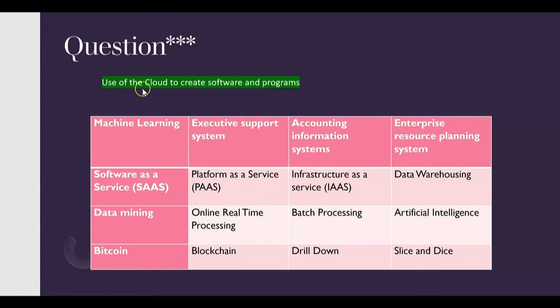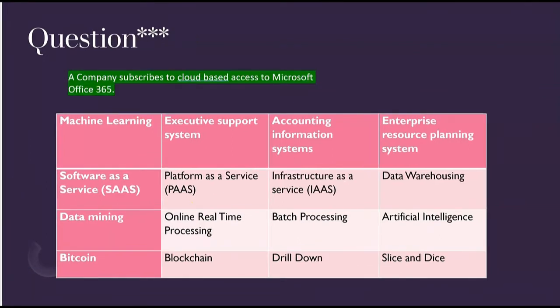Ready for another one? Here we go: 'Use of the cloud to create software and programs.' So once again we're focusing on our three cloud computing options. Use of the cloud to create software — that's not software as a service, because software as a service means using the cloud to access software, not to create it. This would be platform as a service — using the cloud to create software, we need a platform in the cloud that acts as a service so that we could create software and programs.